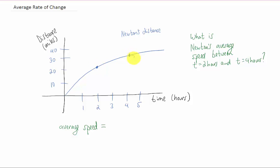What you did is you noticed that Newton had traveled 10 miles between the hours of two and four. And how did you get that 10 miles? Well, you subtracted in your head 30 minus 20 miles. And then you thought, well, he traveled for two hours.